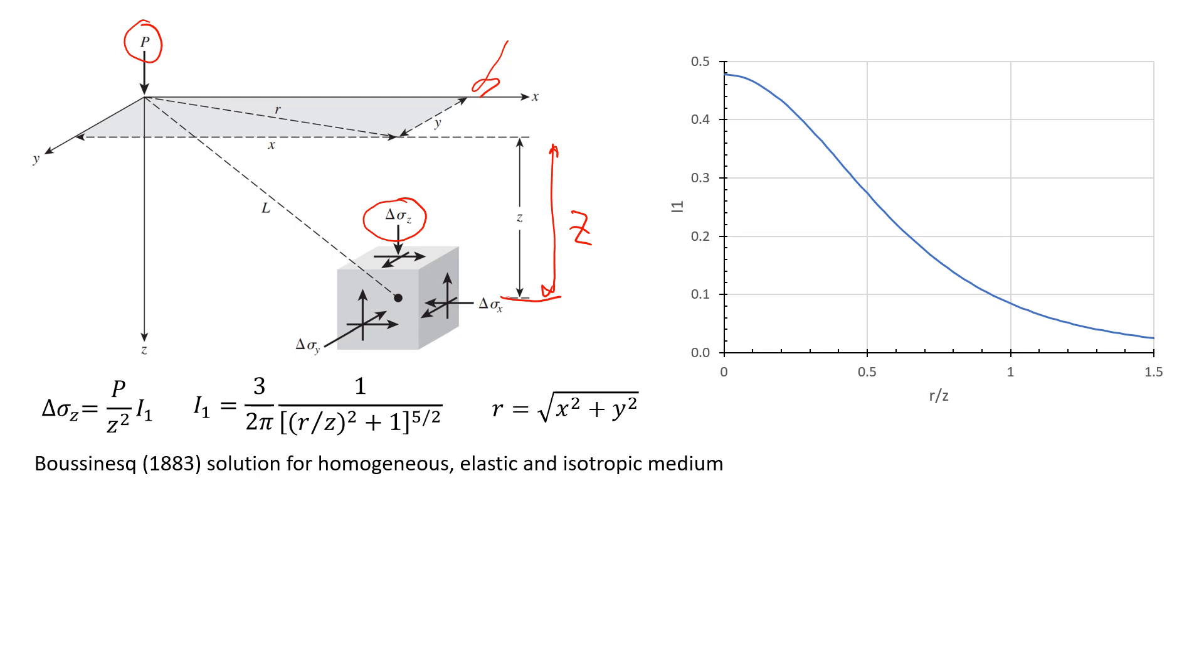So to do that, we are going to use this equation. So the solution of Boussinesq, he proposed it in 1883, but he proposed it for a homogeneous, elastic, and isotropic medium.